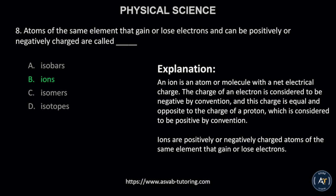This is because an ion is an atom or molecule with a net electrical charge. The charge of an electron is considered to be negative by convention, and this charge is equal and opposite to the charge of a proton, which is considered to be positive by convention. Ions are positively or negatively charged atoms of the same element that gain or lose electrons.